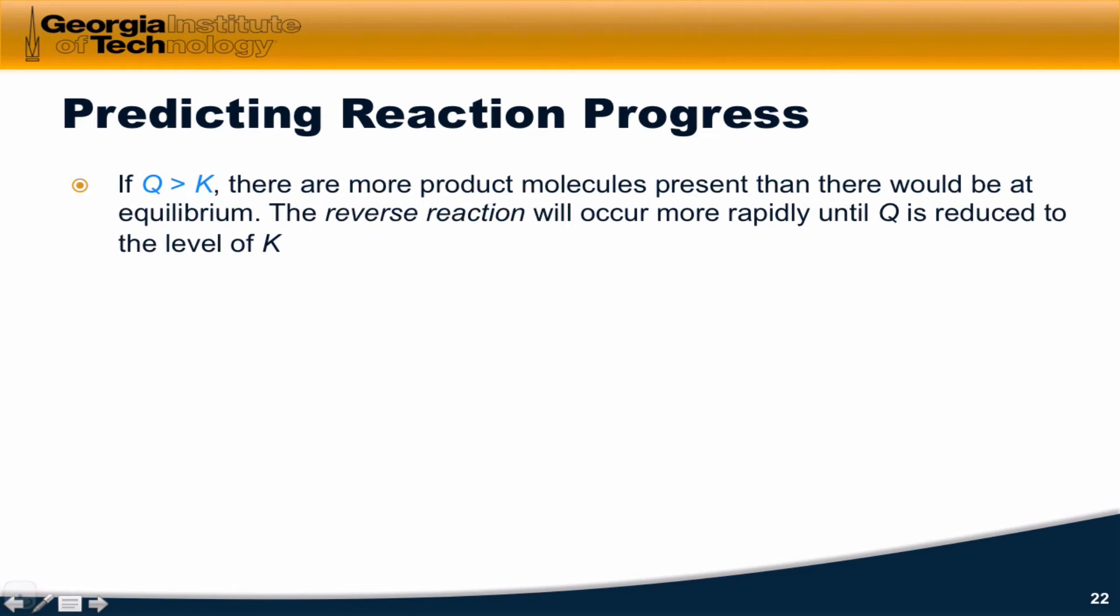So, if Q is greater than K, that means there are more product molecules. The numerator of the equilibrium expression is too high. There are more product molecules present than there would be at equilibrium. So, the reverse reaction will occur more rapidly when Q is greater than K. That, in fact, causes Q to decrease until it reaches the level of K at which point macroscopic chemical change ceases.